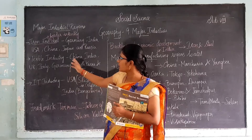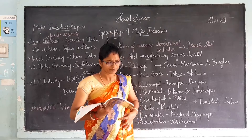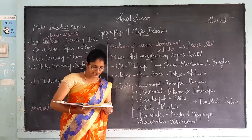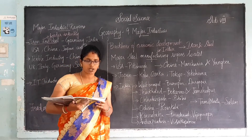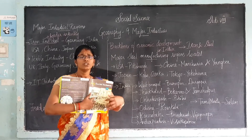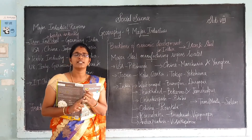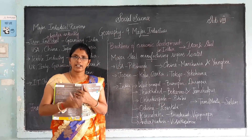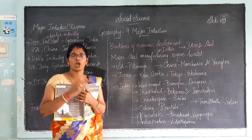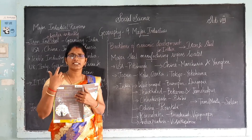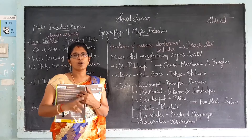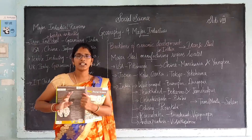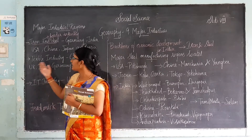First let us go into the iron and steel industry. In page number 106 they have given you how major industries are distributed across various industrial regions of the world. Steel is a major component used in manufacturing railways, trucks, automobile industries, and railway tracks. The most major industry first is iron and steel industry, and the second one is textile industry.